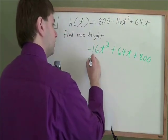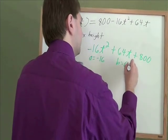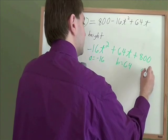And we can see we've got a quadratic with a is negative 16, b is 64, and c is 800.